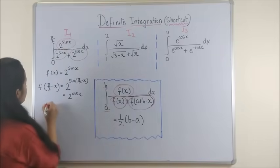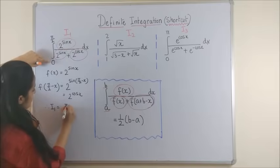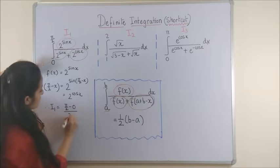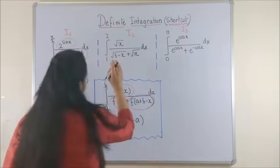Having done that, now all you need to do is, therefore, i1 is b minus a upon 2. So the answer is simply pi by 4. Wasn't that simple?